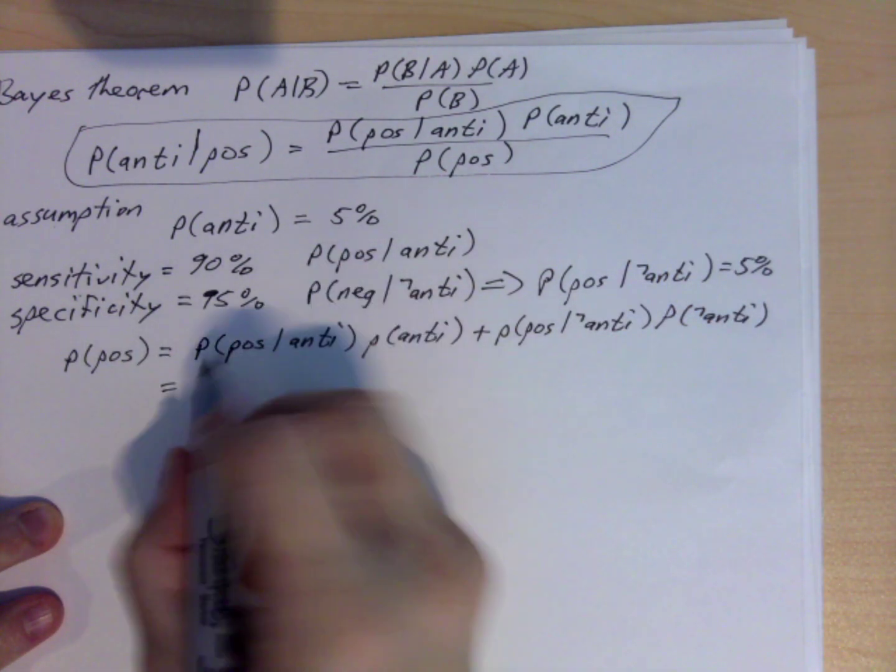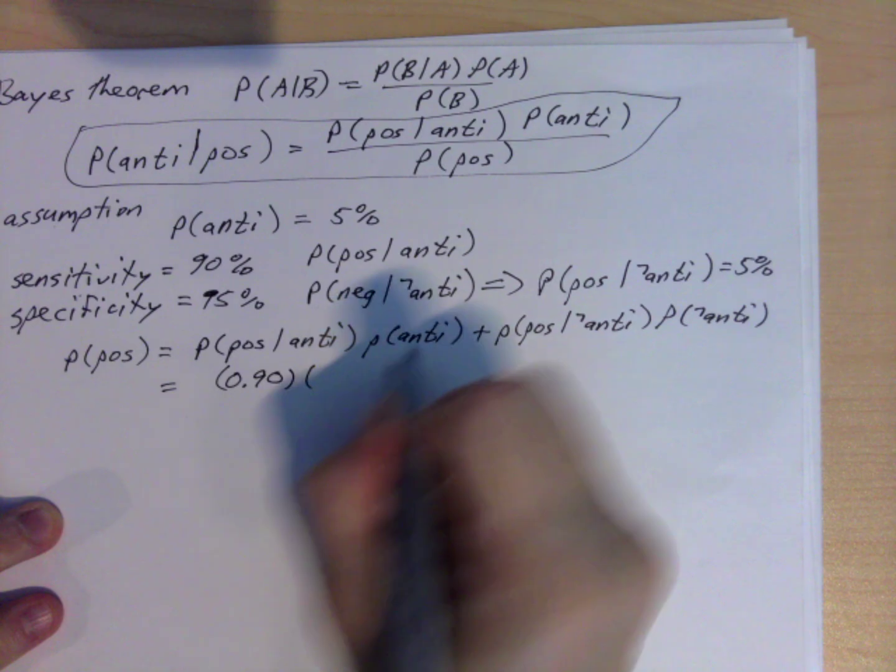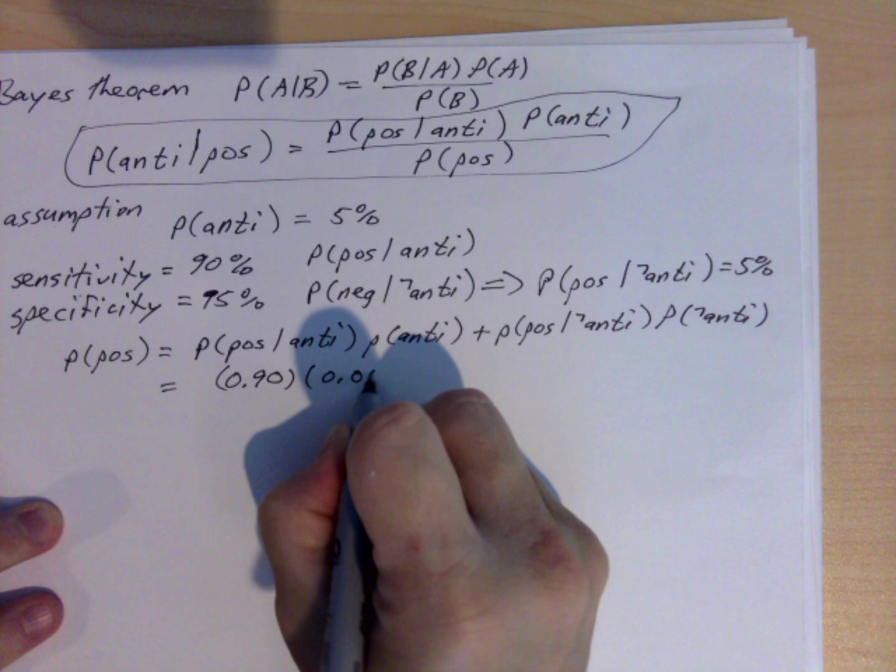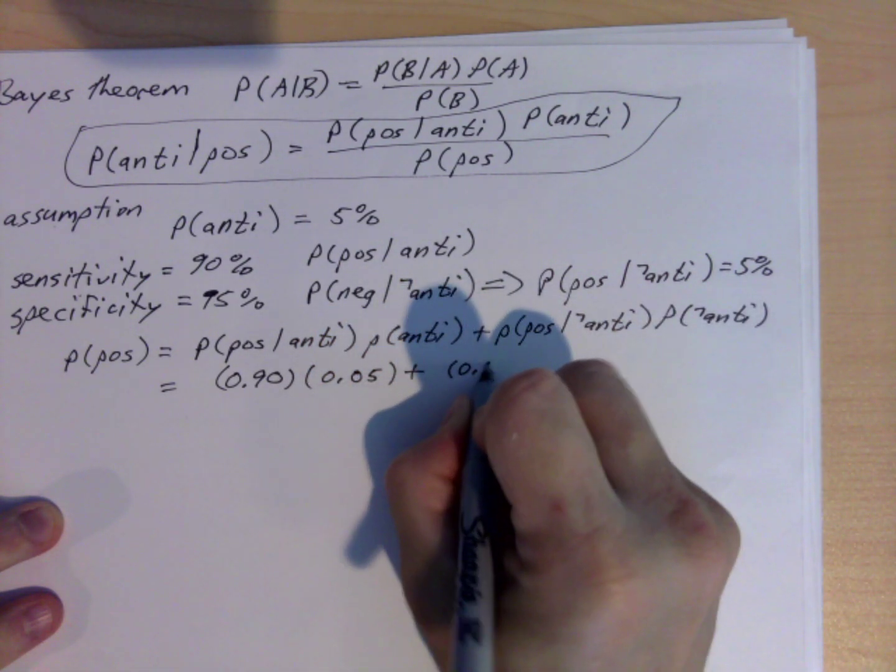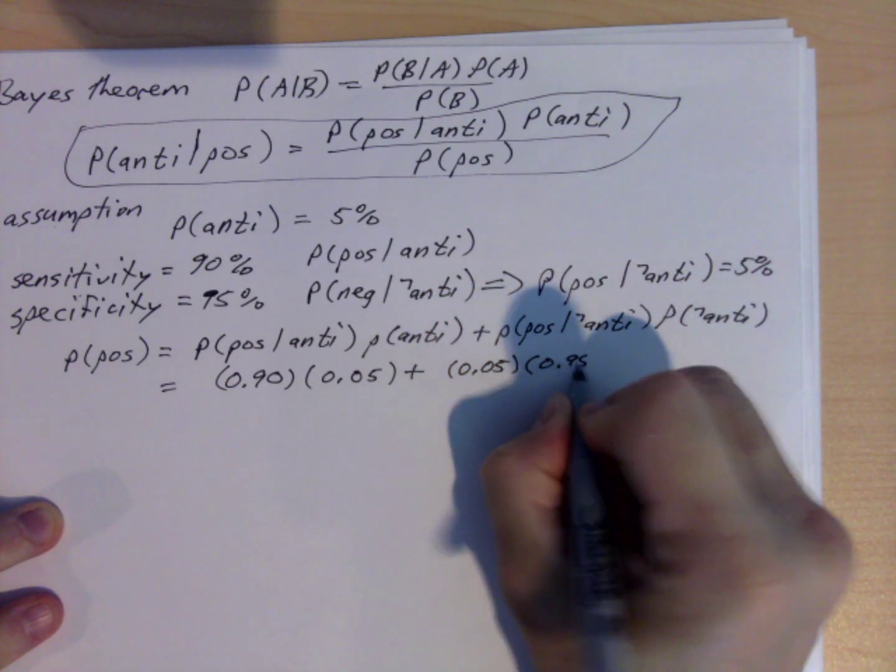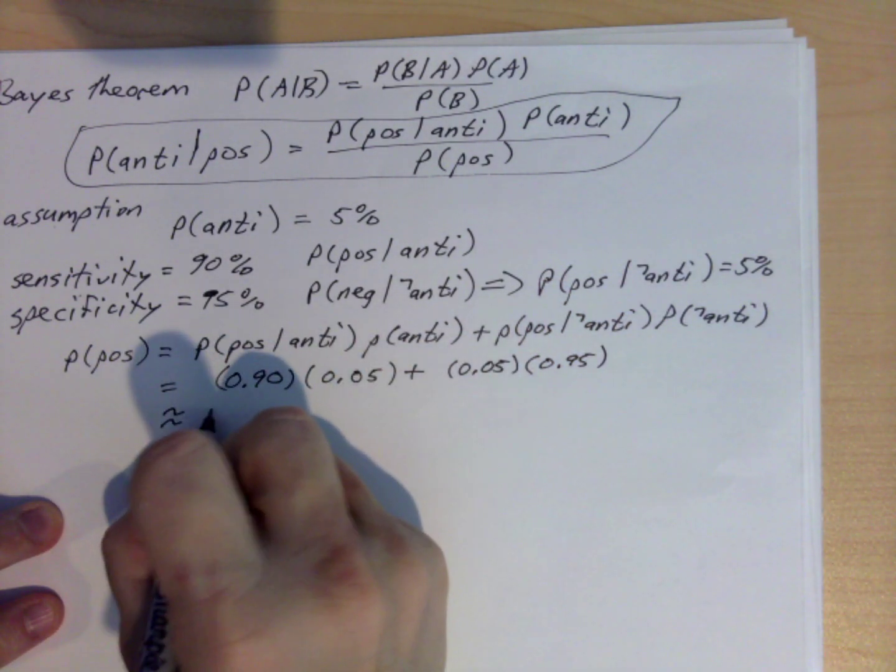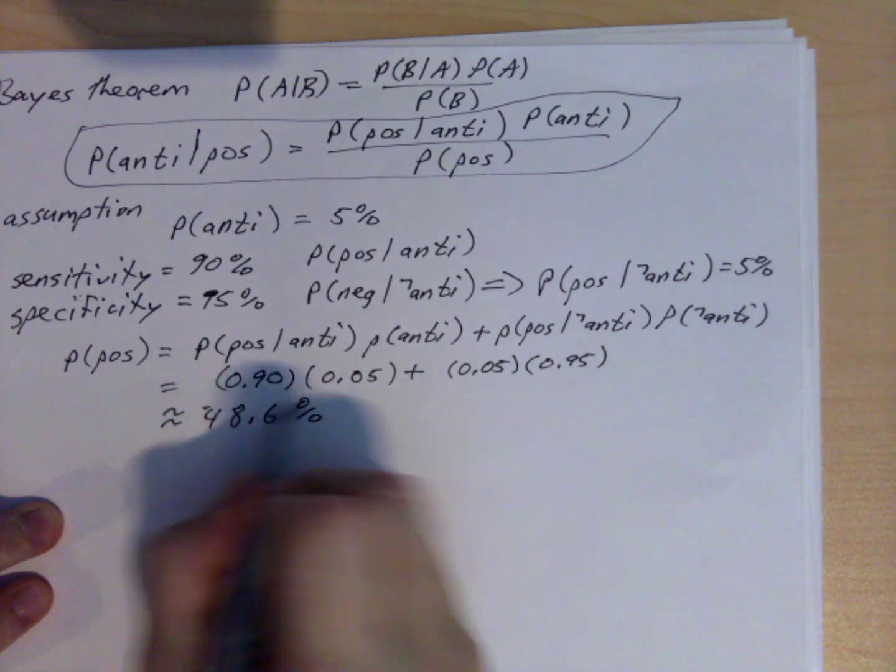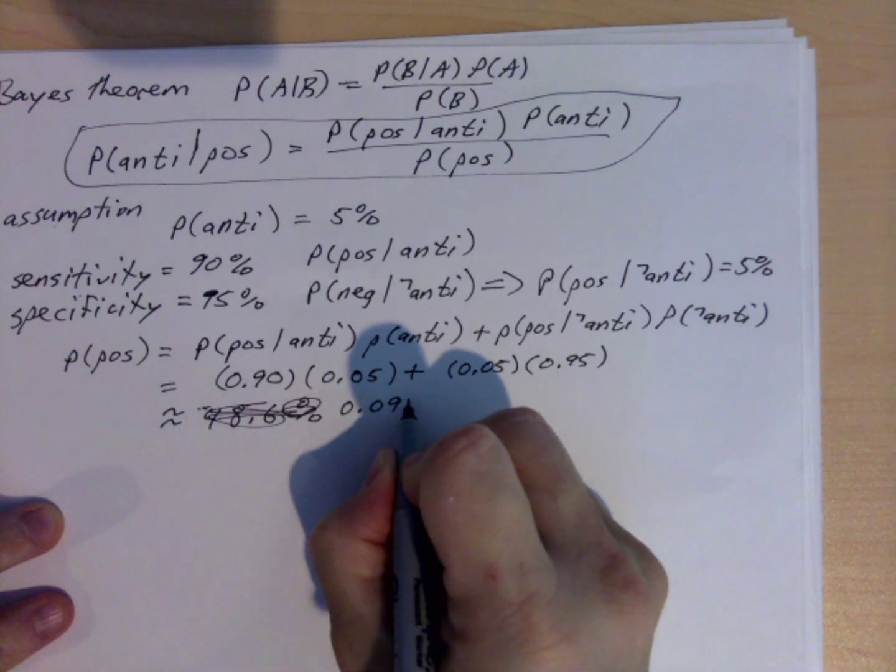And so this right here is our 90%, 0.9, times our 5%, 0.05, plus this 5% times 0.95, which works out to be about 48.6%. Or excuse me, sorry, that's our final number. This number will be 0.0925.